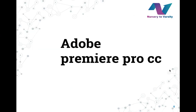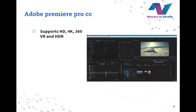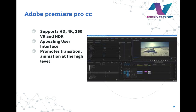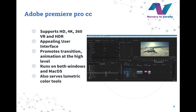At last, we have Adobe Premiere Pro CC. This is a software which allows us to work in 360 degree VR as it changes the field of view angle as required. It also supports 4K videos and contains an appealing user interface, which makes it very helpful for newcomers and new users. It also promotes transition animation at a high level, as it contains a number of filters, transition effects, and animation effects which make videos even more attractive. It runs on both Windows and Mac OS. It also serves Lumetric color tools, which generally refers to 3D lookup tables for powerful and customizable looks.